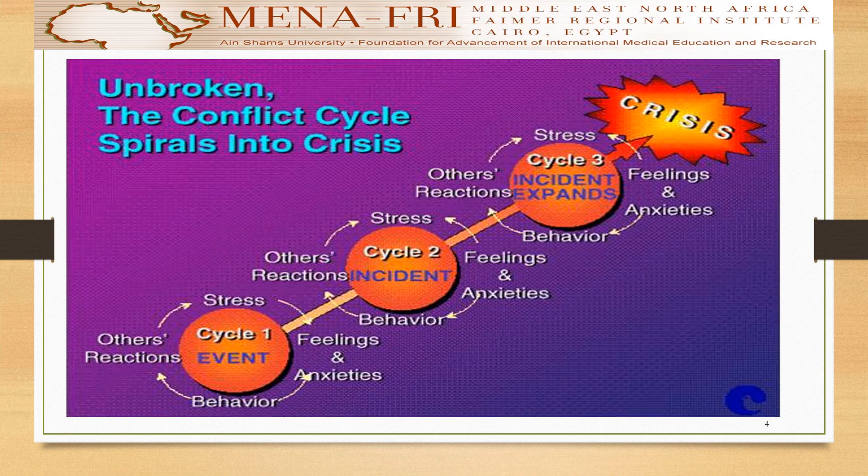Now we should know what conflict spirals are and how a conflict can be aggravated and reach a crisis. Conflict spirals are interactions in which cumulative behaviors by one or more team members, coupled with improper interactions and misinterpretations of those behaviors, can result in escalating destructive behavior and can end in a crisis.